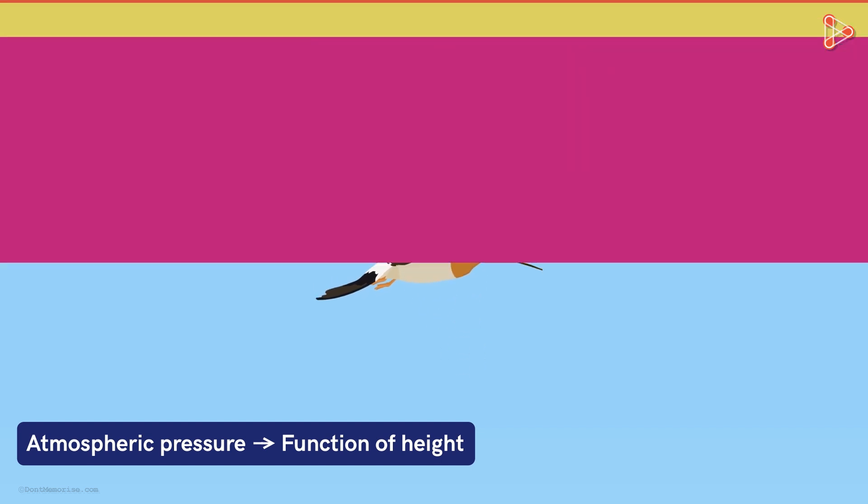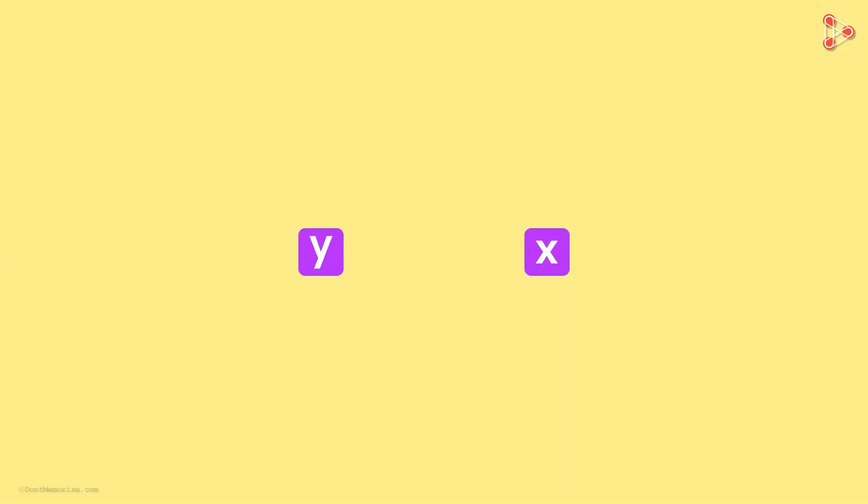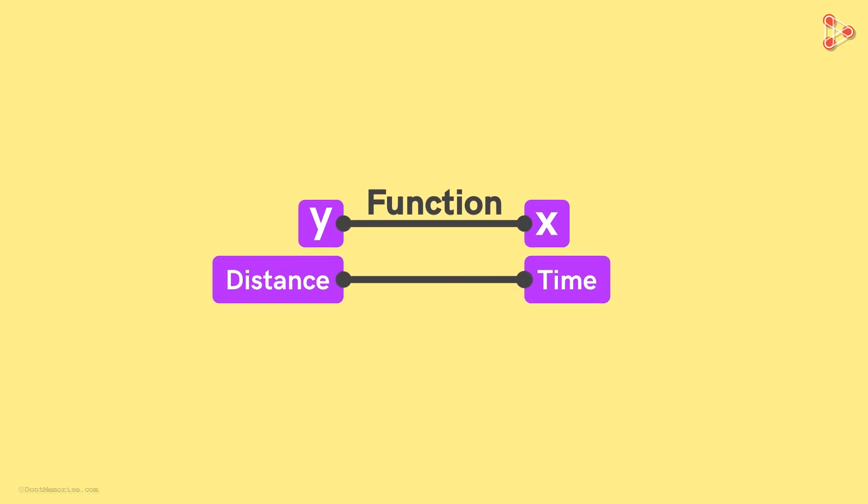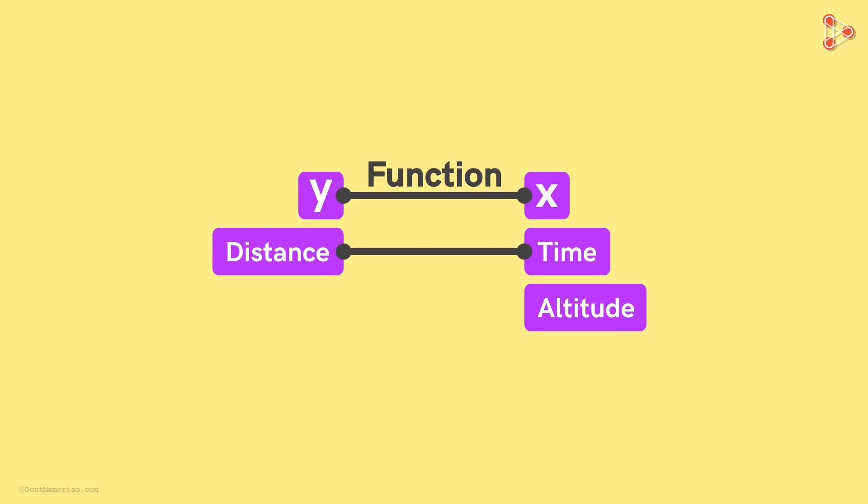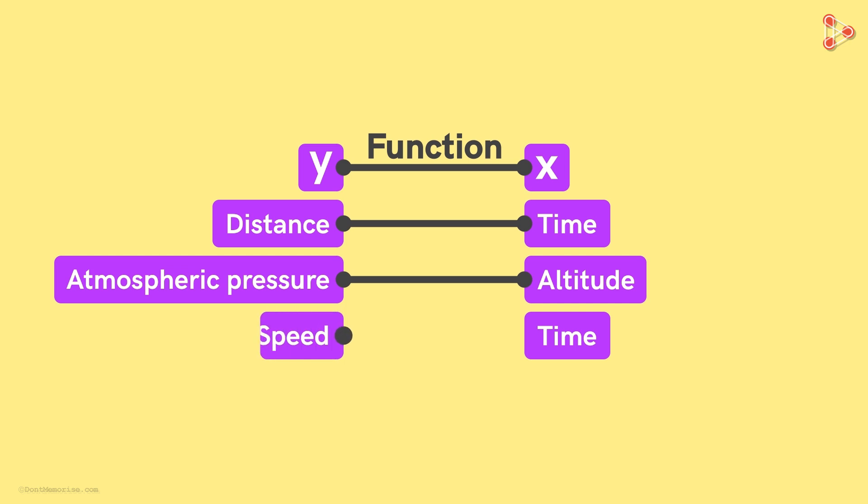We previously saw that when we have two quantities X and Y such that for each value of X, there is one value of Y, then we say that Y is a function of X. So here X could be time and Y could be the distance. X can be the altitude and Y the atmospheric pressure. X could be time and Y the speed.